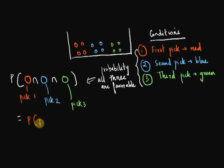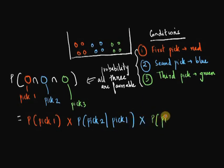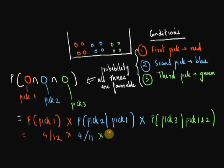I simply must multiply the probability of the first draw being red with the conditional probabilities of my second and third draw being blue and green.